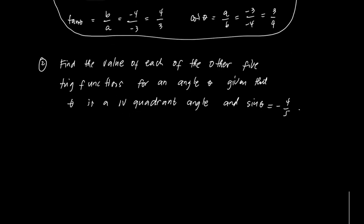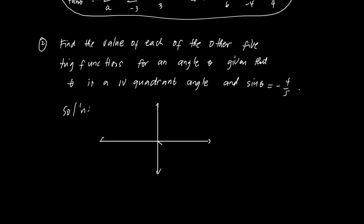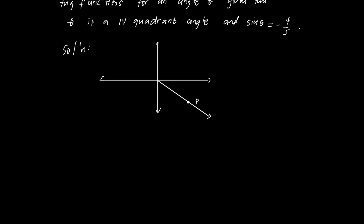Another example: find the value of each of the other five trig functions for an angle theta, given that theta is a fourth-quadrant angle and sine theta equals negative 4 over 5. Since sine theta equals B over R, and R is always positive, our B is negative 4 and our R is 5. From the Pythagorean principle, A equals the square root of R squared minus B squared, which is the square root of 5 squared minus negative 4 squared.